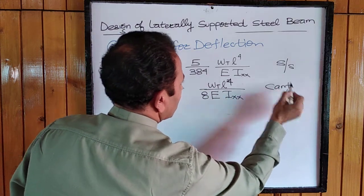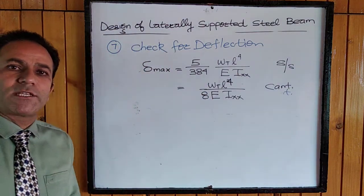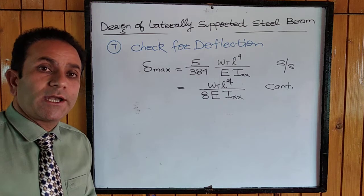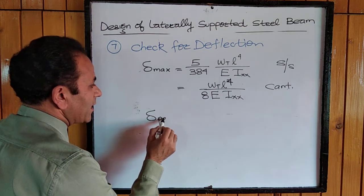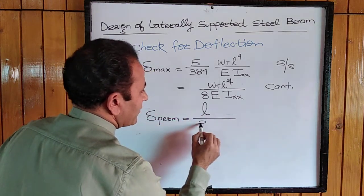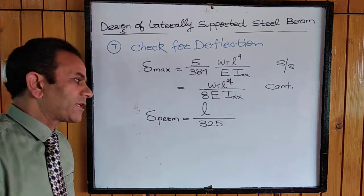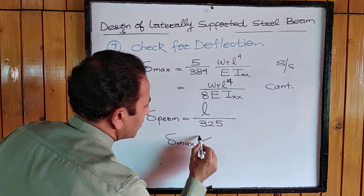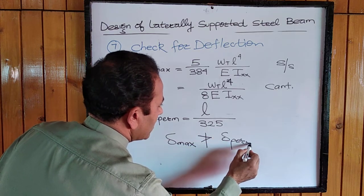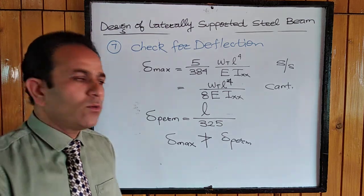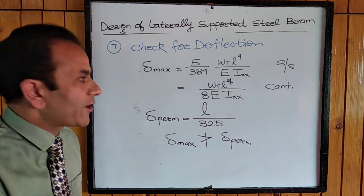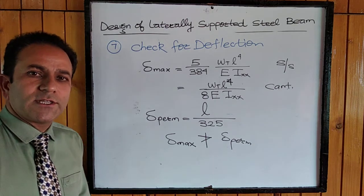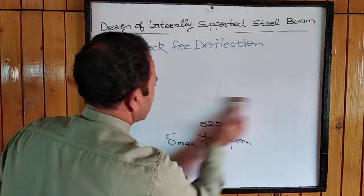For a cantilever beam, the maximum deflection at the free end is W times l to the power 4 divided by 8 times E times Ixx. After calculating delta max, we check that it does not exceed the permissible value. The permissible deflection for a steel beam is the effective span divided by 325. Delta max shall not exceed this permissible value; if it does, we revise the section.